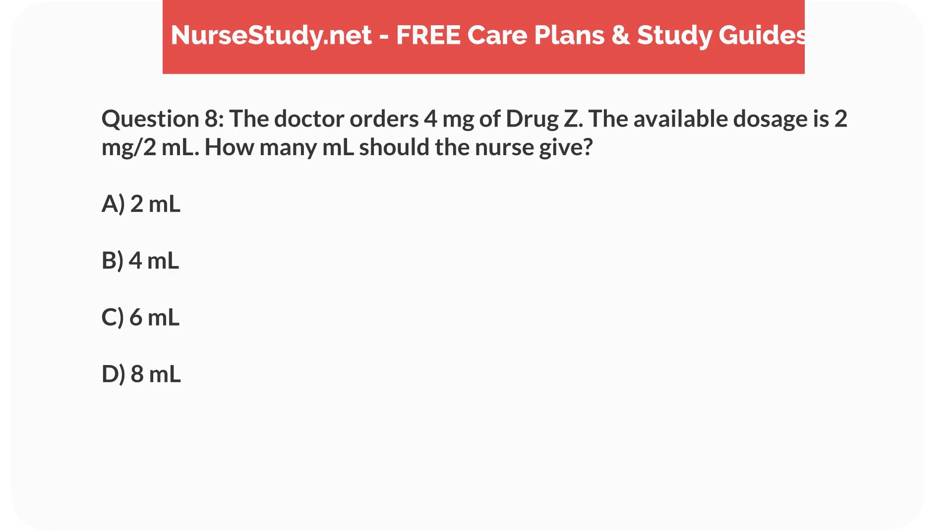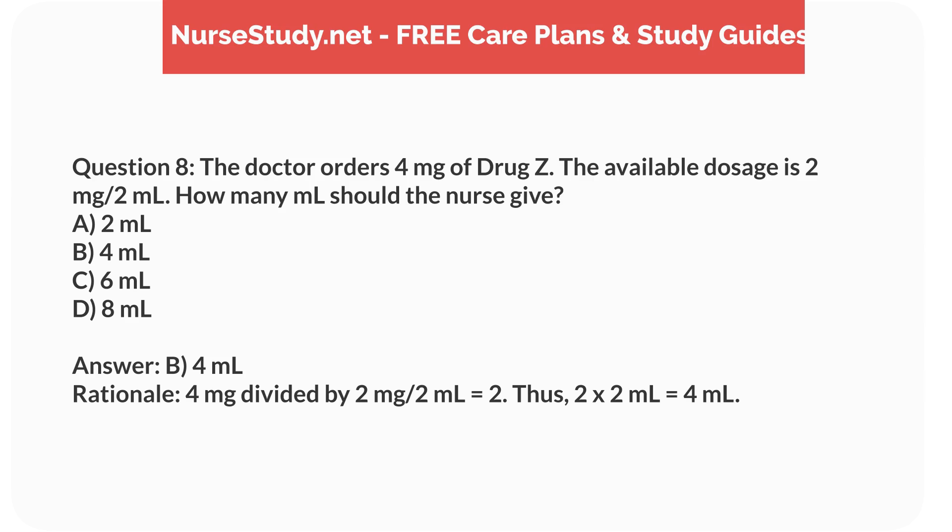Question 8. The doctor orders 4mg of drug Z. The available dosage is 2mg per 2mL. How many mL should the nurse give? a. 2mL, b. 4mL, c. 6mL, d. 8mL. Answer: b. 4mL. Rationale: 4mg divided by 2mg per 2mL equals 2. Thus, 2 times 2mL equals 4mL.